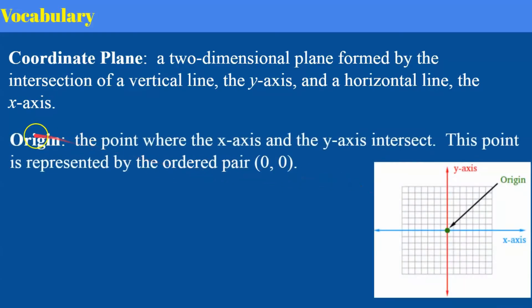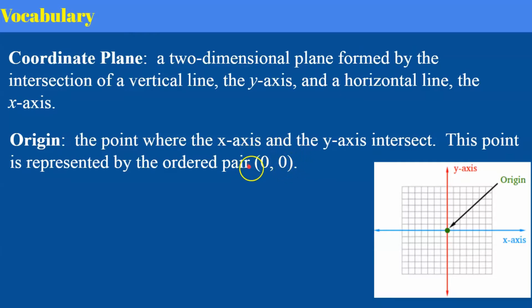Now we can build on that and say that the point where the x and y-axis intersect is the origin. This point is represented by the pair zero, zero. So this is the origin — the location of it. It's where the x and y-axis intersect, and it is named by parentheses zero comma zero parentheses. This is the name of this ordered pair stating the location on the coordinate plane of that point.